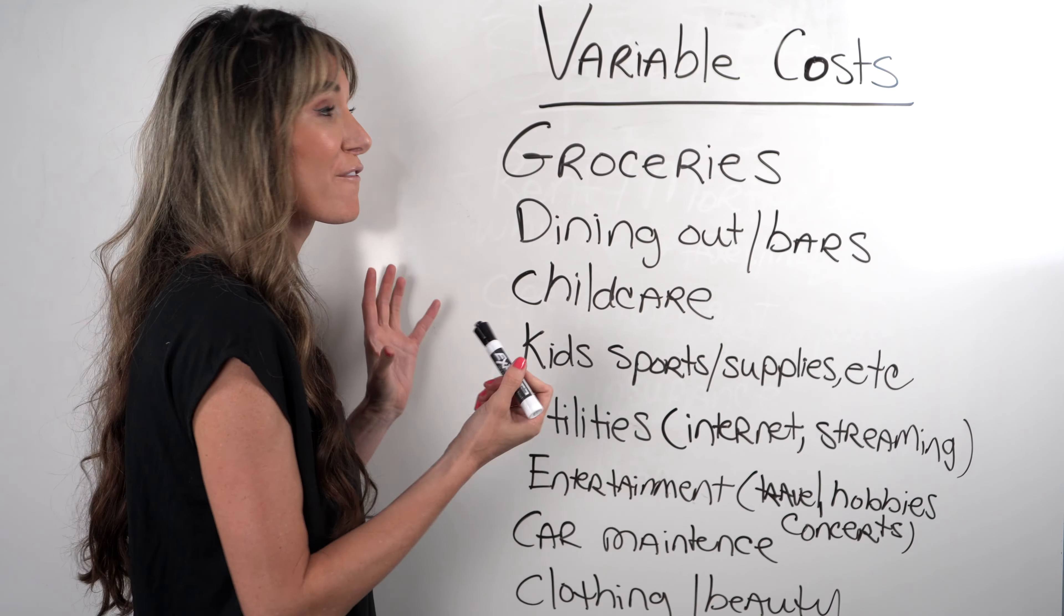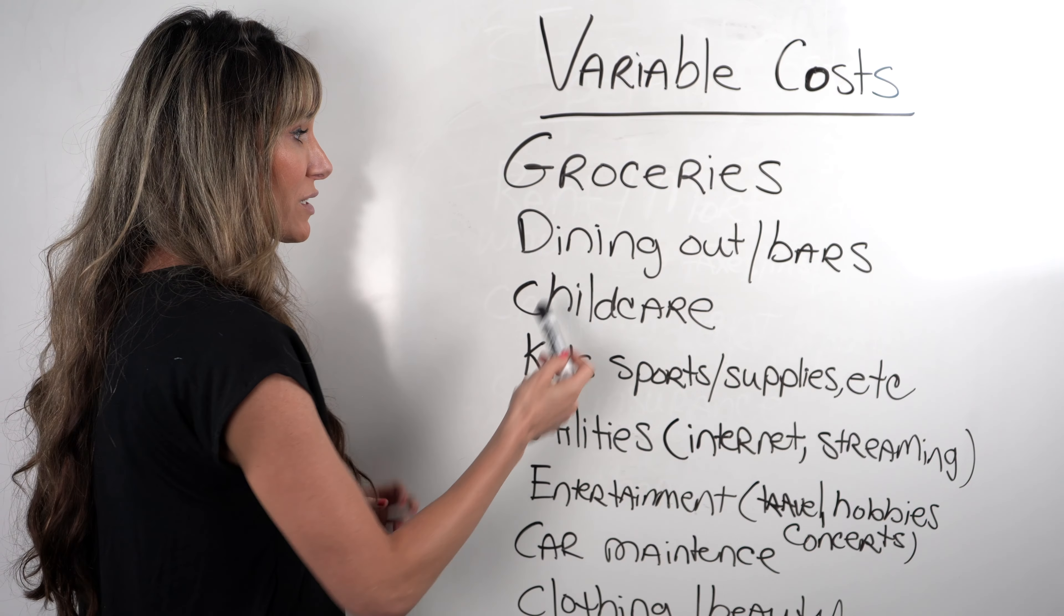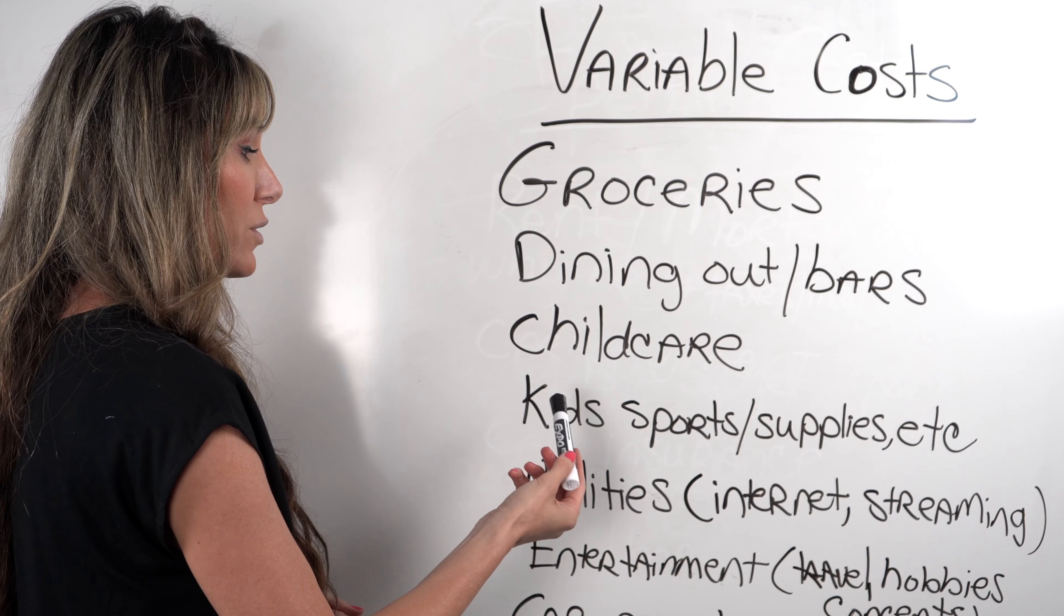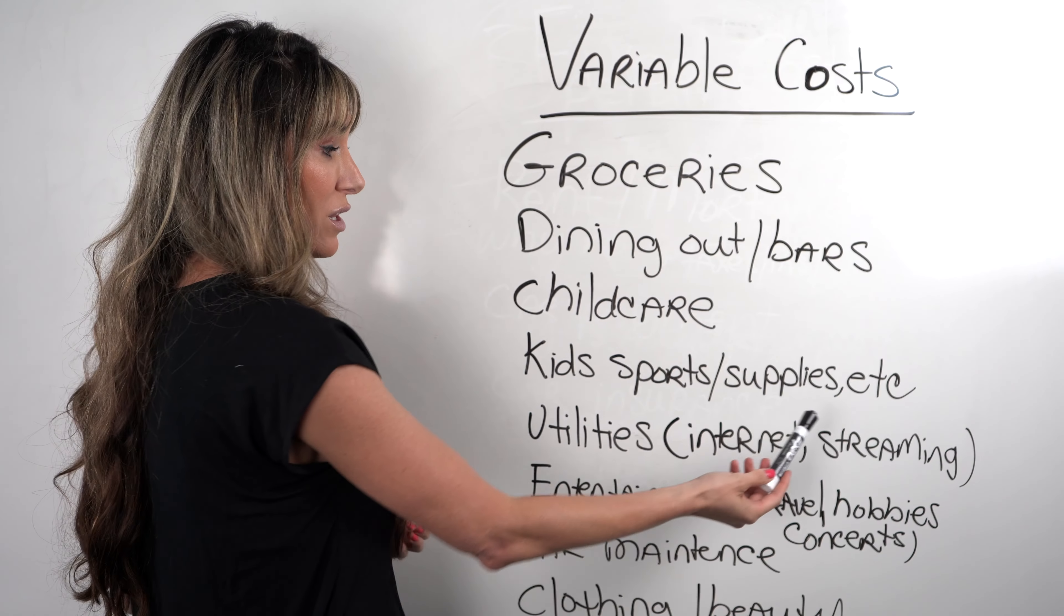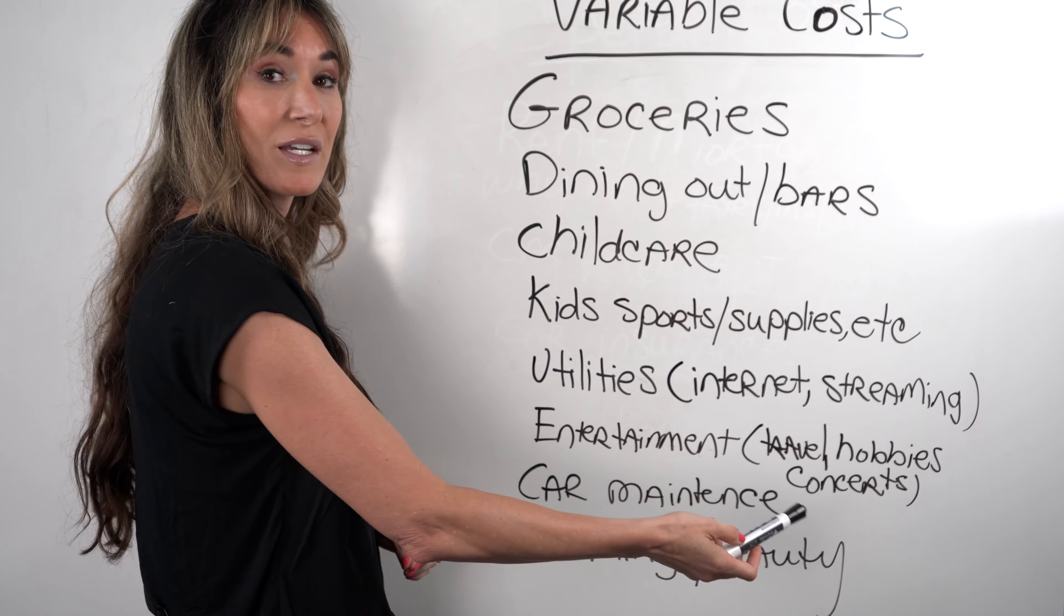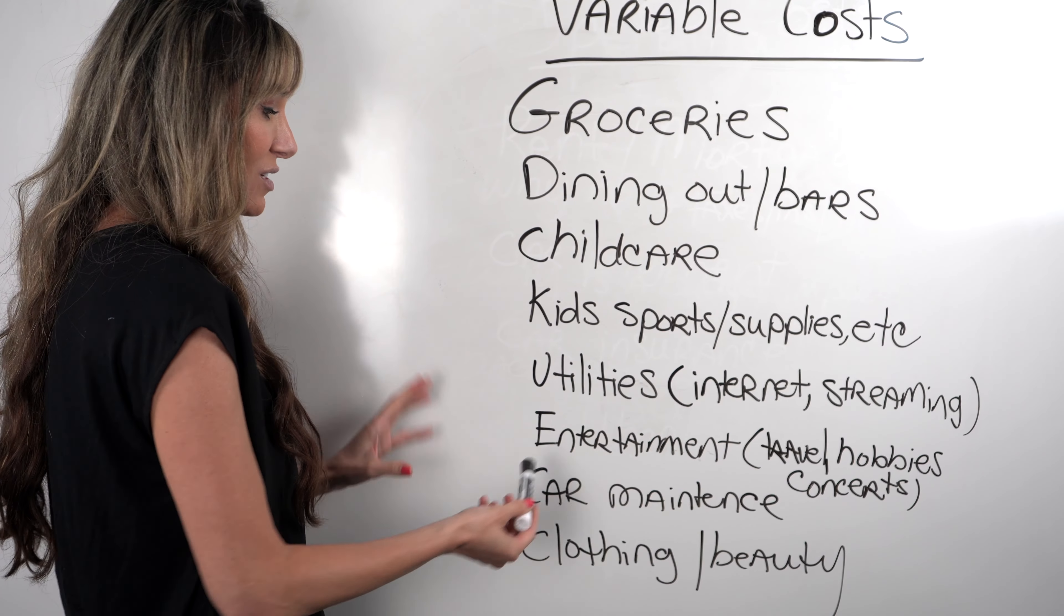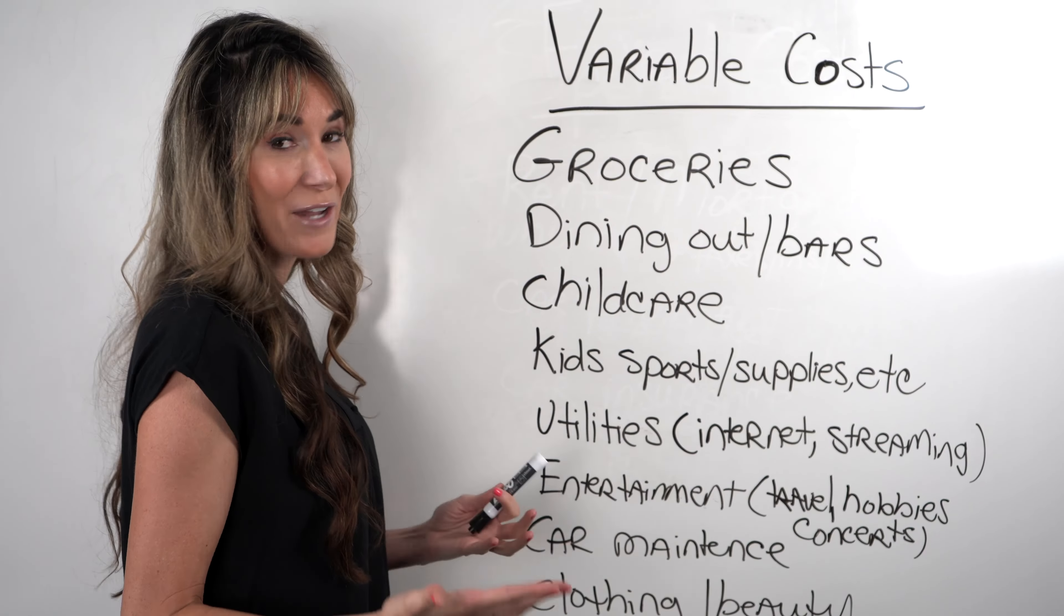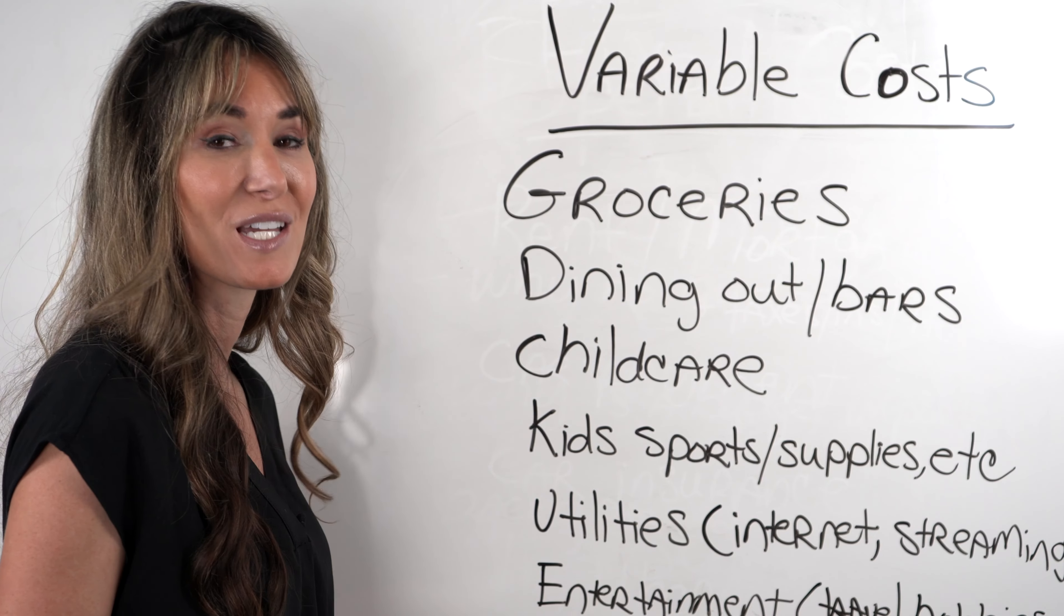The other part of this equation is talking about variable costs because, well, they can vary from month to month. So this is going to be things like your groceries, especially things like dining out and going out and spending money at bars and alcohol. Childcare can vary. Also, the type of sports and supplies that your kids needs that can vary from season to season. Your utilities, like for instance, if you're paying for a lot of streaming or your internet cost. Also entertainment. This can be a big one. If you travel quite a bit, if your hobbies are really expensive, or if you're bound to go to a Taylor Swift concert, that can also add up. Things like car maintenance, we do have to budget for that, but it is a variable cost. And then things like clothing and beauty, obviously there's a wide range of what you can spend on any of these things, but these are all variable costs, and we still have to budget for them on a monthly and yearly basis.